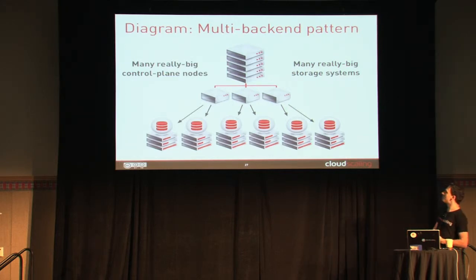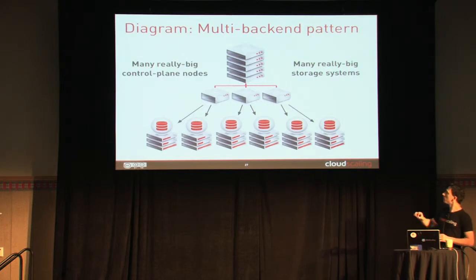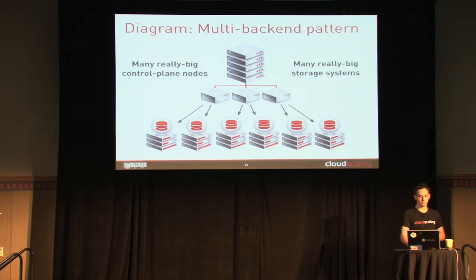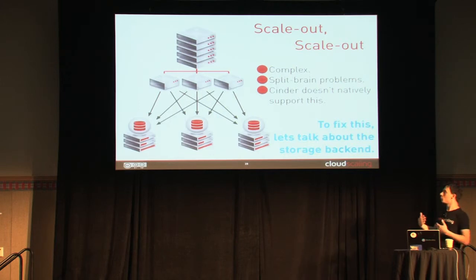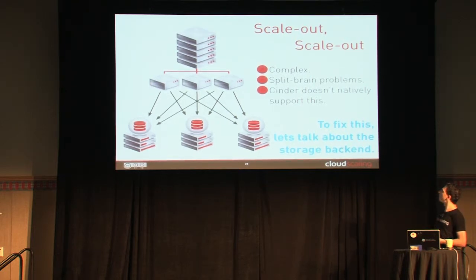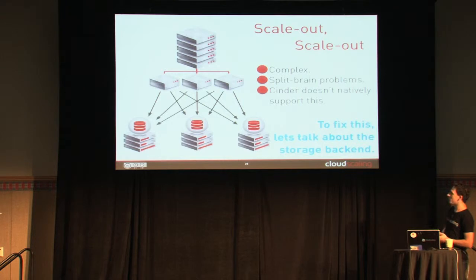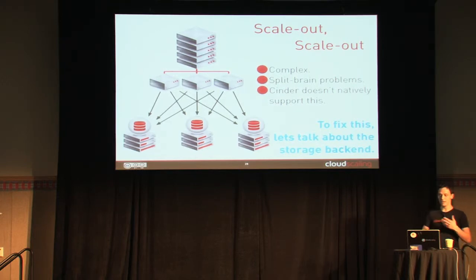It becomes very expensive because most of these storage systems are expensive systems. You also limit your ability to scale, because now you have six storage systems and three control plane nodes. To prevent one of your control plane nodes going out and actually scale up that control plane node and get additional reliability, you have to make it very complex. You get split-brain problems if you try to control one storage node from one machine. It's a very hard problem to solve, and Cinder doesn't actually do this. So to really do the scale-up pattern, you can't even do it with Cinder at all.